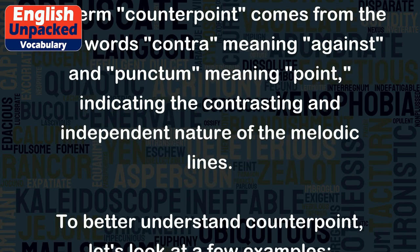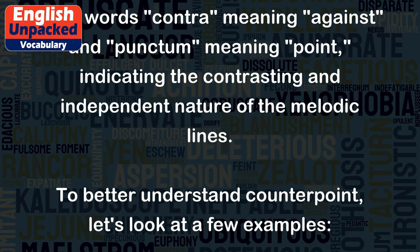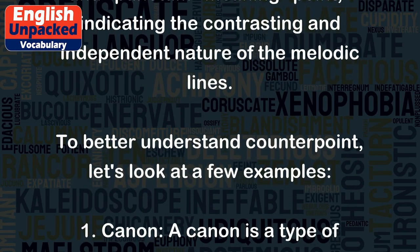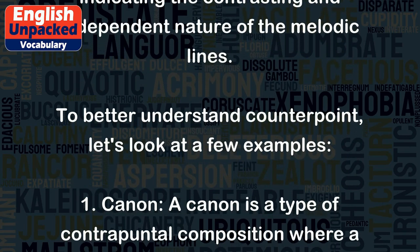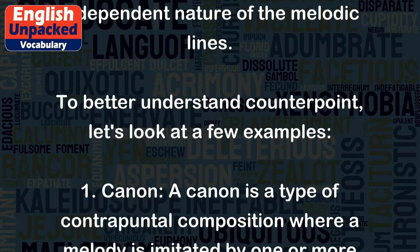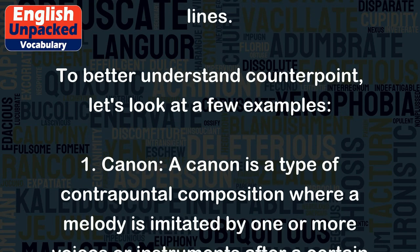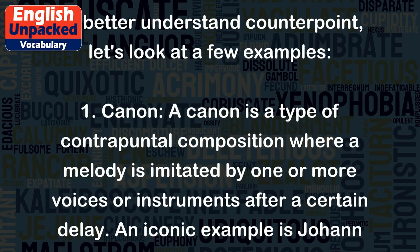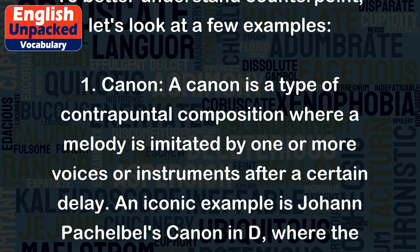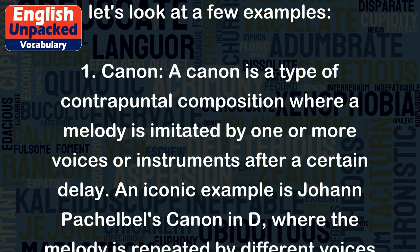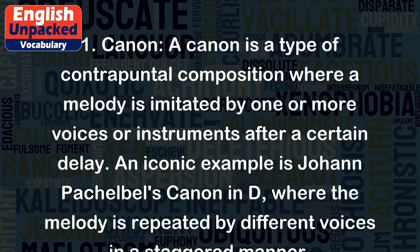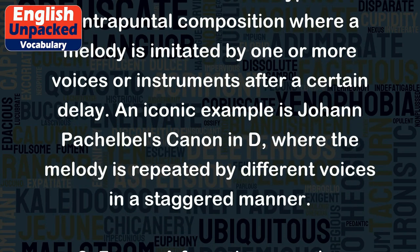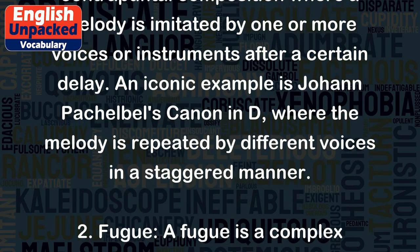To better understand counterpoint, let's look at a few examples. First, Canon: a canon is a type of contrapuntal composition where a melody is imitated by one or more voices or instruments after a certain delay. An iconic example is Johann Pachelbel's Canon in D, where the melody is repeated by different voices in a staggered manner.